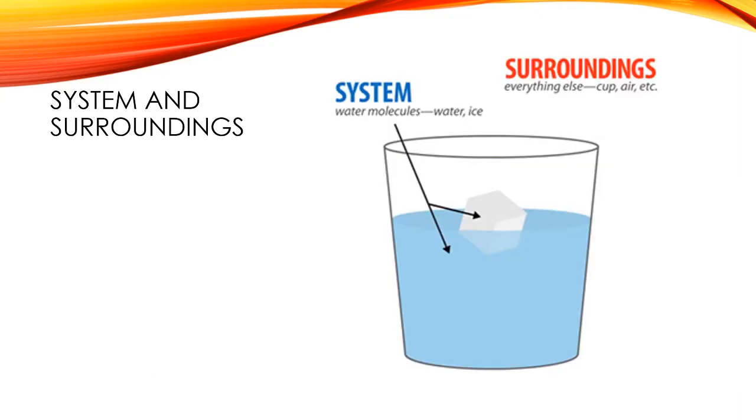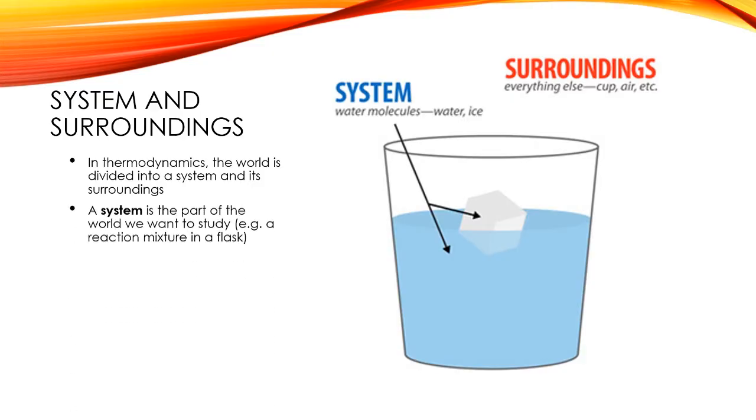When we're talking about these sorts of things, it's really important to understand this idea of a system and its surroundings. So a system is what we're going to be looking at. So in this particular picture, we have a system that would be the water molecules and the water and the ice inside this cup. And the surroundings to my system would be the cup, the air, everything around the system. So that's hopefully not too hard to understand. The system is what I'm studying, what I'm looking at, and the surroundings is everything else.